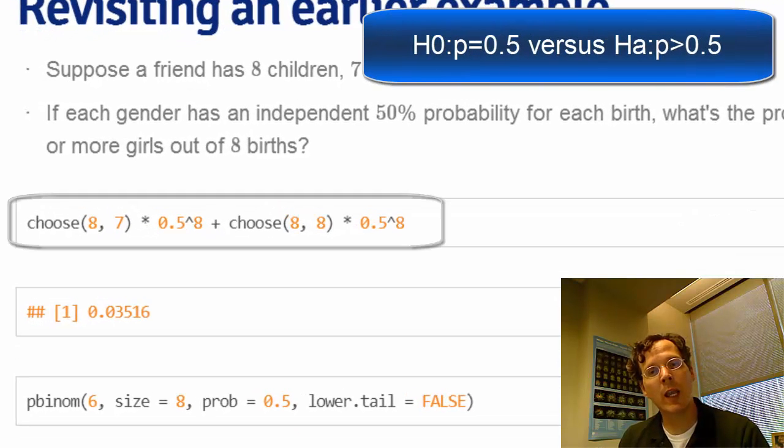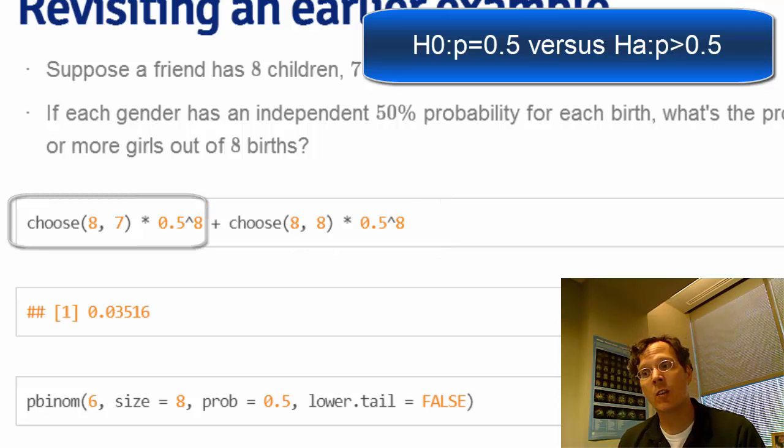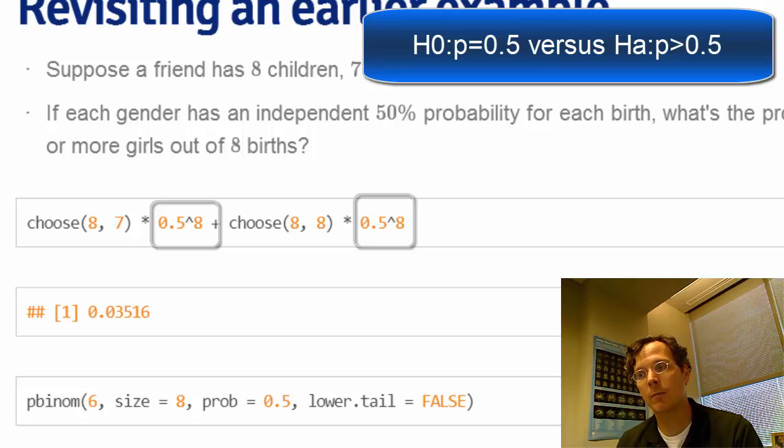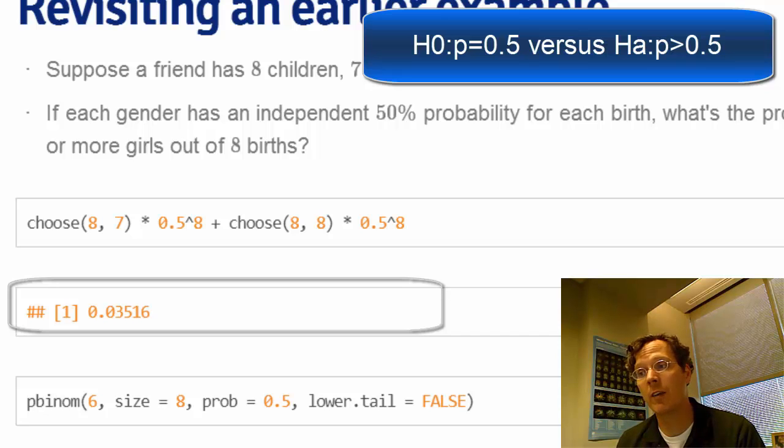Seven or eight would be as or more extreme than was actually observed. So the p-value calculation is the binomial calculation for seven plus the binomial calculation for eight. Under the null hypothesis, where p is 0.5, that works out to be about 3.5%.